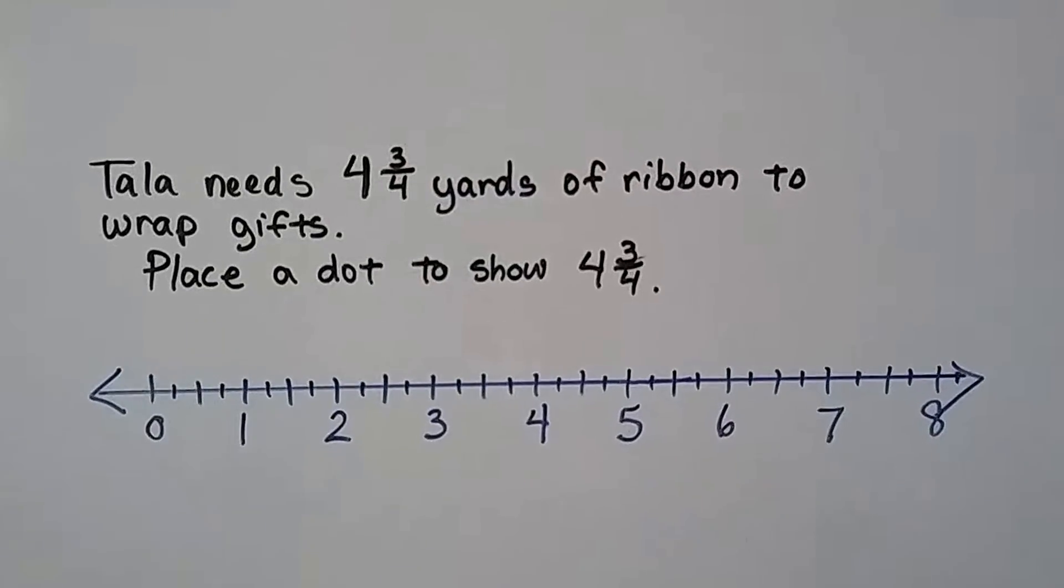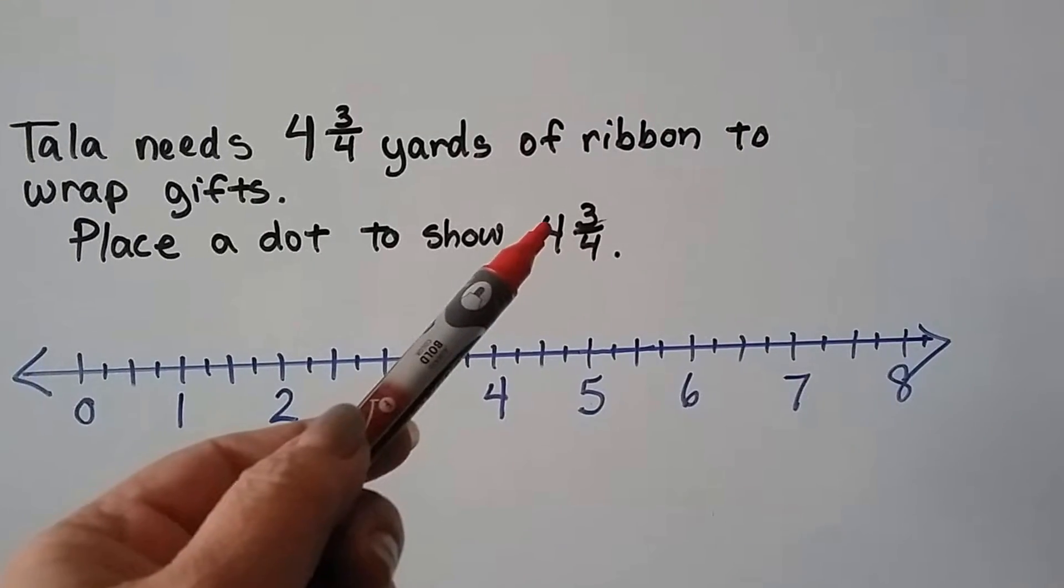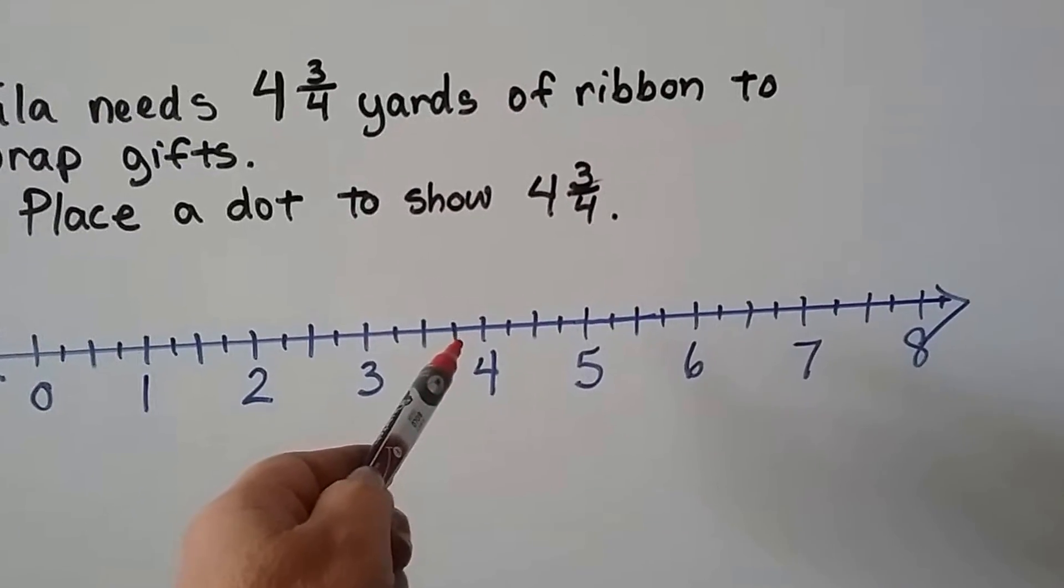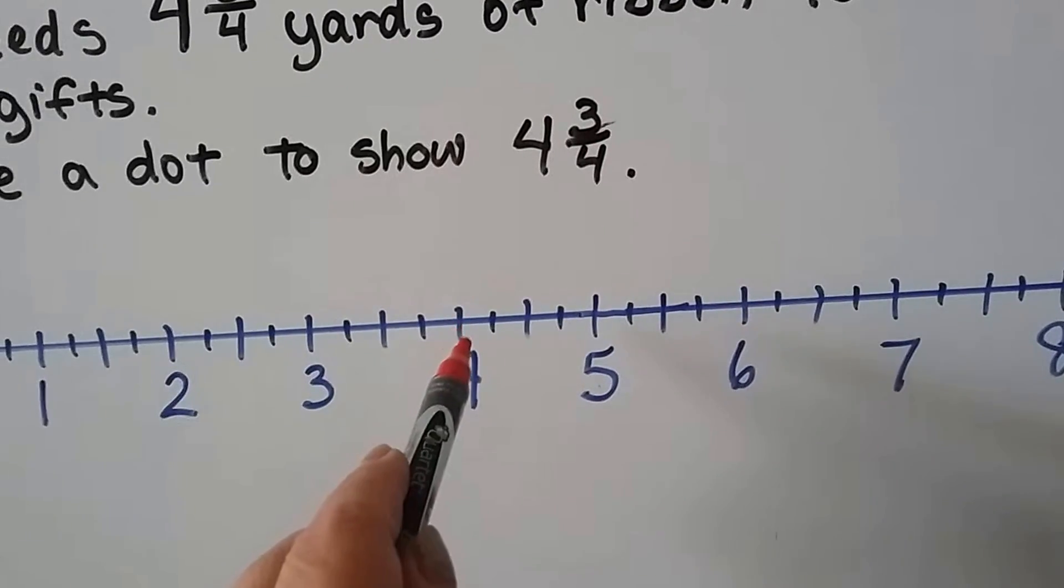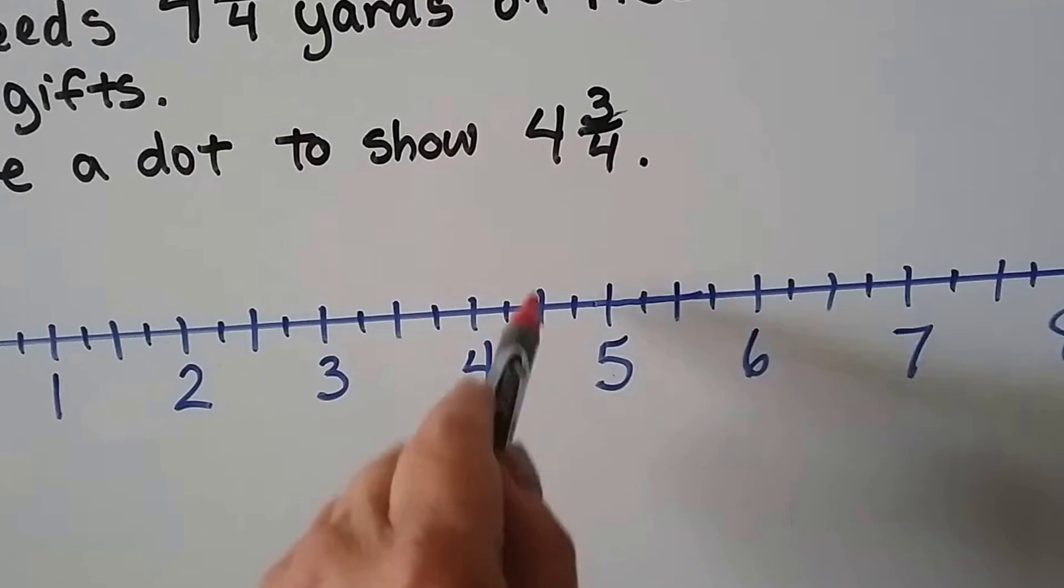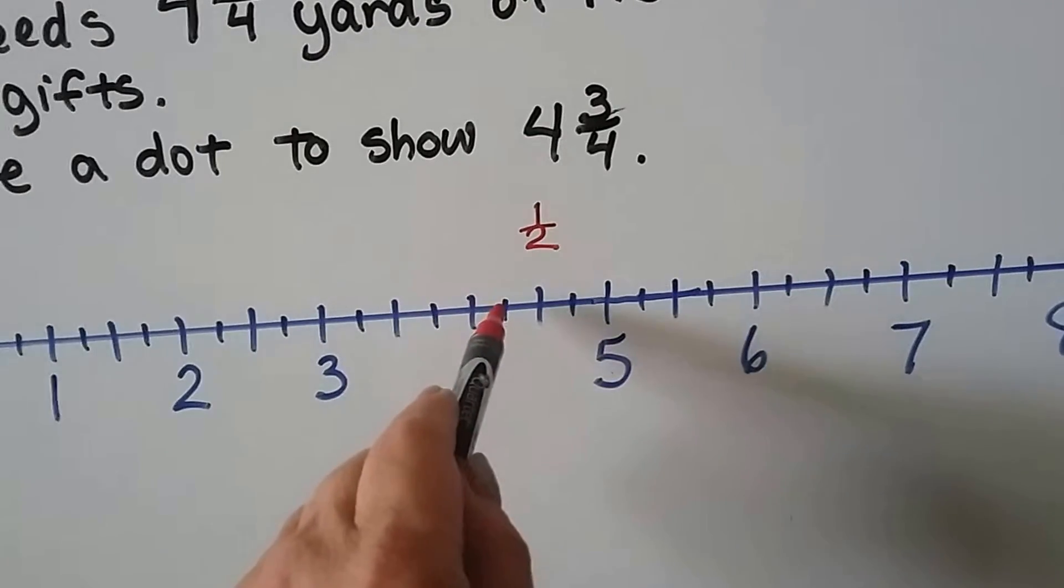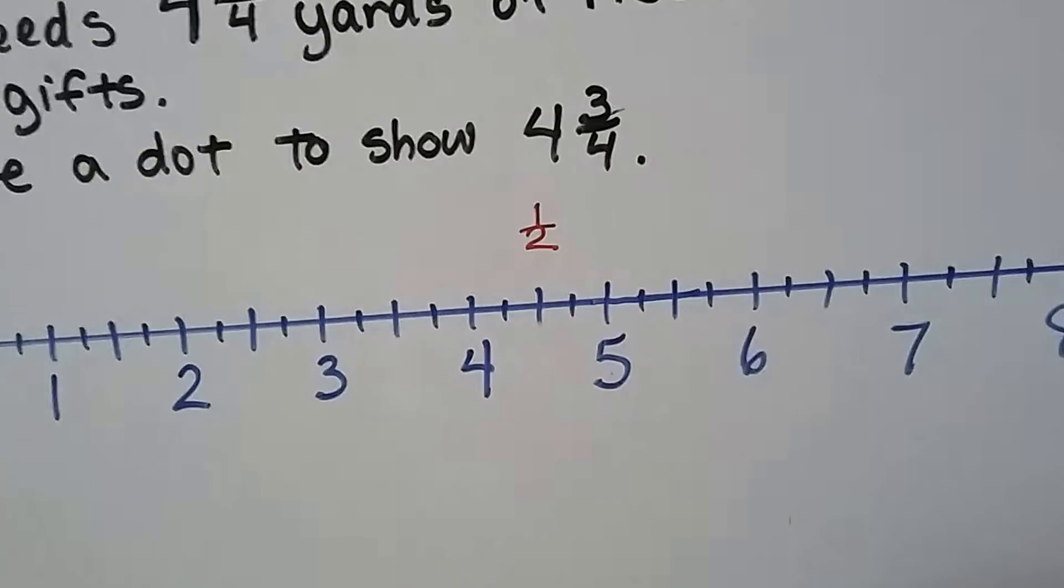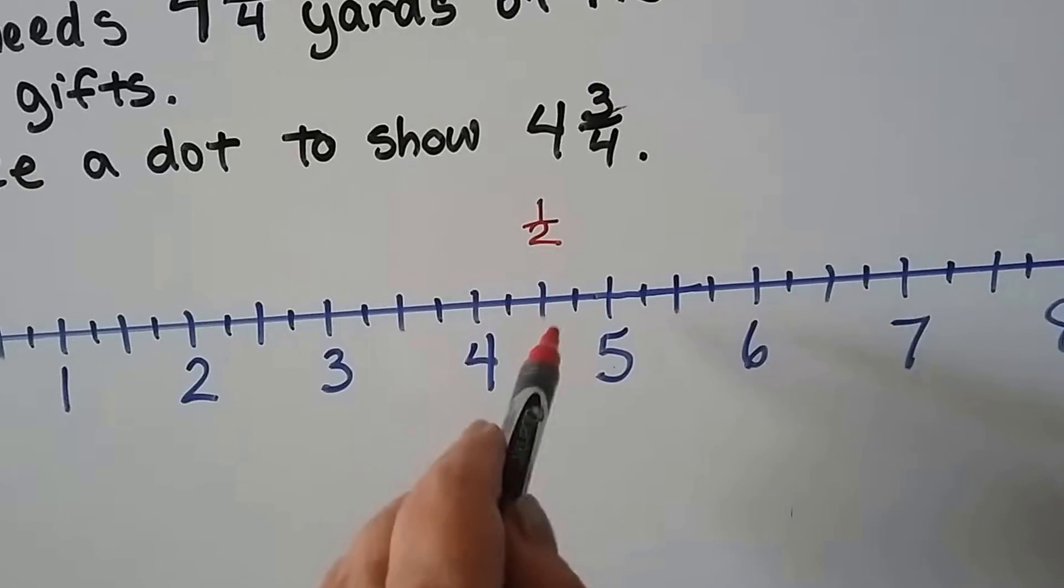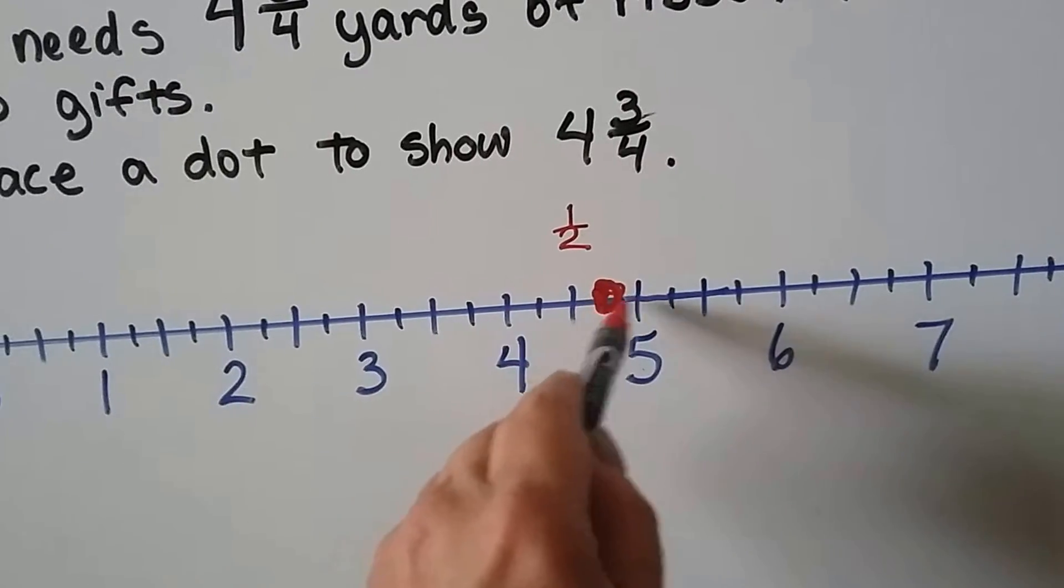Tala needs four and three fourths yards of ribbon to wrap gifts. Place a dot to show four and three fourths. First thing we do is locate the whole number four because it's a nice mixed number. We locate the four, it's right here. And now we need to find three fourths. Well, if this is the four and that's the five, then this middle one is four and a half. So that's the half mark. Then that must be one fourth, and that must be three fourths, just like a clock. So if we want to find four and three fourths, it would be right here in between the half and the five.